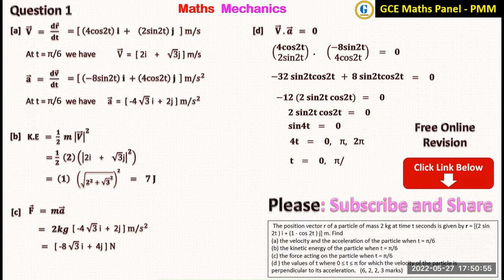So for t in the interval 0 to pi, the values are t equals 0, pi on 4, or pi on 2.